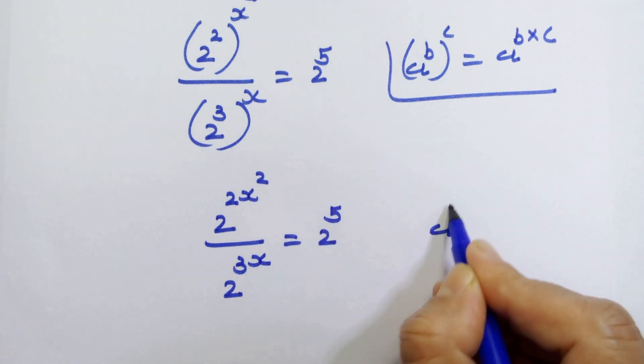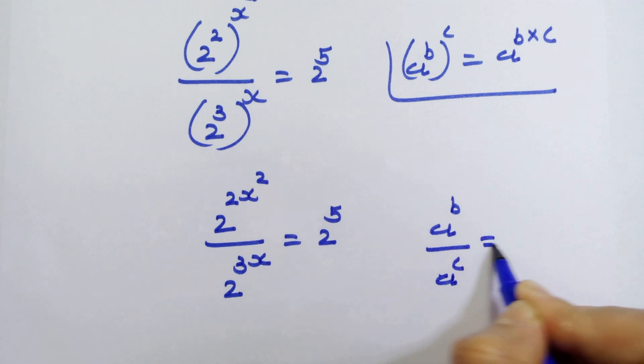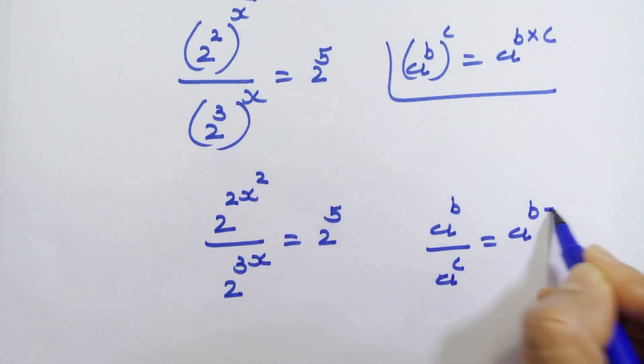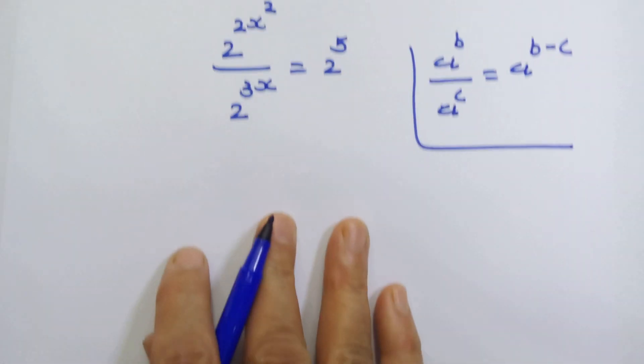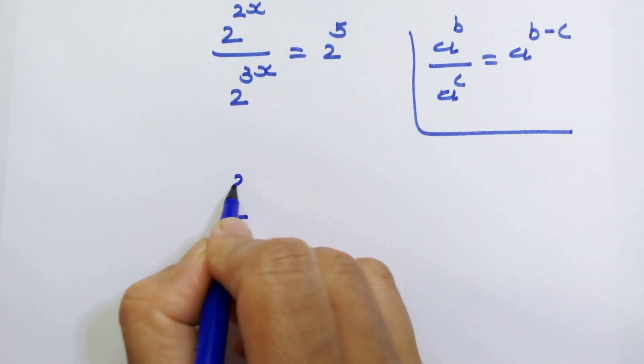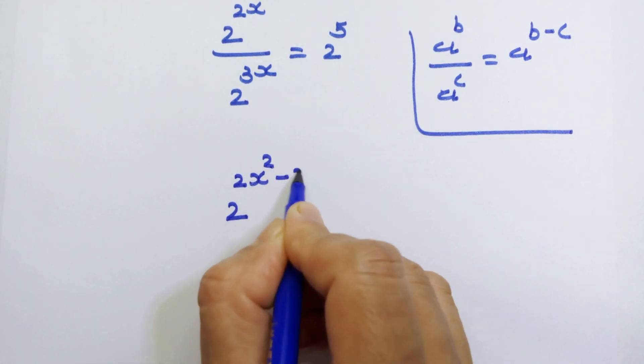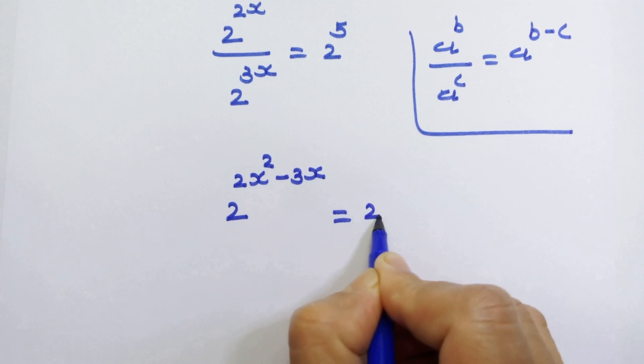Now if we have a raised to b upon a raised to c then we can write like this a raised to b minus c. In this manner here we can write 2 raised to 2x square minus 3x is equal to 2 raised to 5.